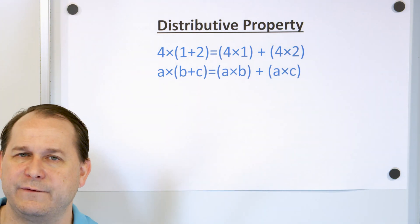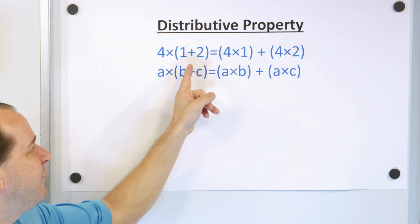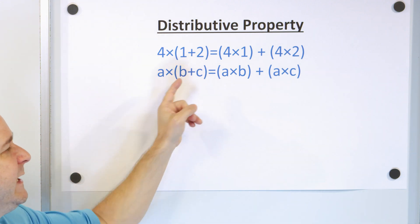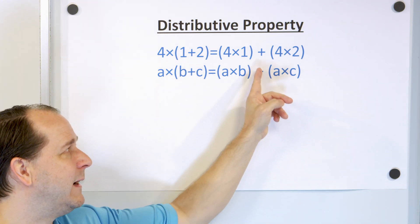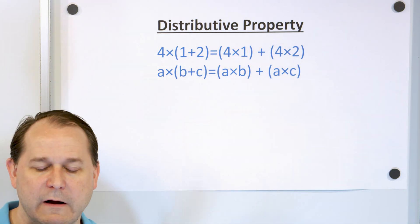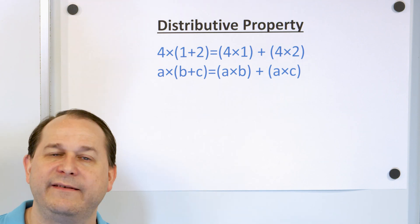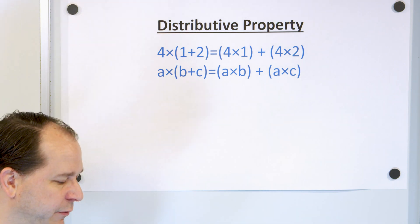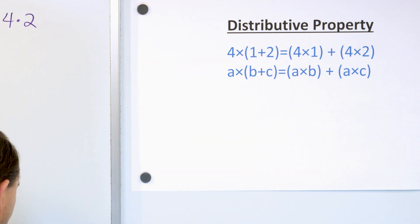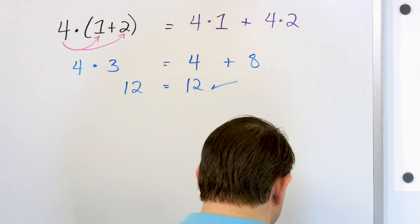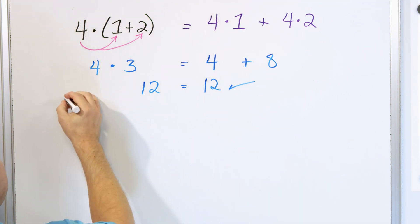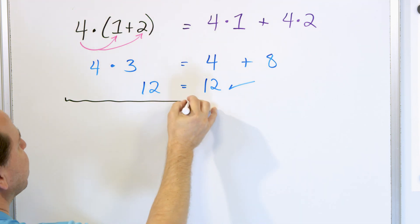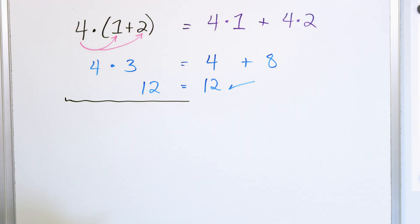As we go forward, sometimes we'll have a minus sign in there, and in that case we'll just have a minus sign on the outside as well. So this is the essence of the distributive property, and we're going to do it over and over again because it really is incredibly important.